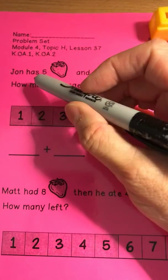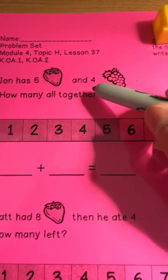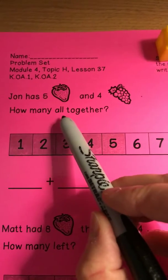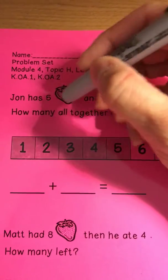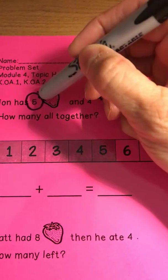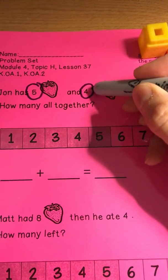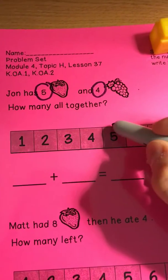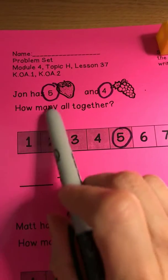John has five strawberries and four grapes. How many all together? So I need to start with the number that I know — five. John has five strawberries and four grapes, so I'm going to find my number five because he has five.